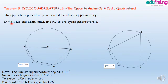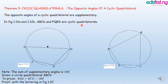In figures 1.12a and 1.12b, A, B, C, D and P, Q, R, S are cyclic quadrilaterals. These two diagrams here are cyclic quadrilaterals. Note: the sum of supplementary angles is 180 degrees. To prove that angle BAD plus angle BCD equals 180 degrees — proof with the lettering in figure 1.12c, which is on the next page.